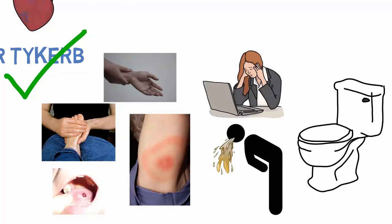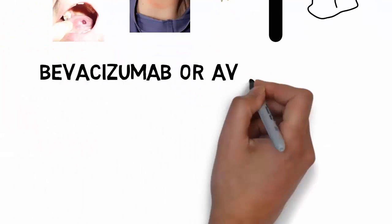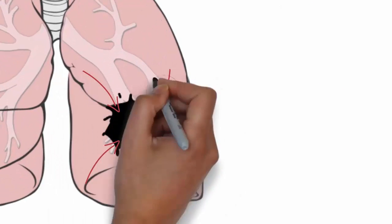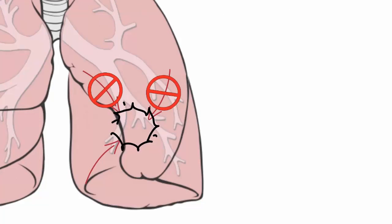Bevacizumab or Avastin: Tumors get nutrients and oxygen from blood vessels. If the contact between tumor and blood vessel is terminated, the tumor will not get nutrients and oxygen, causing the tumor to starve.